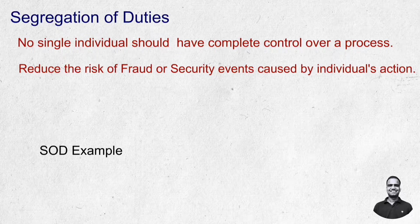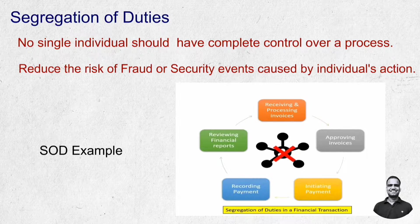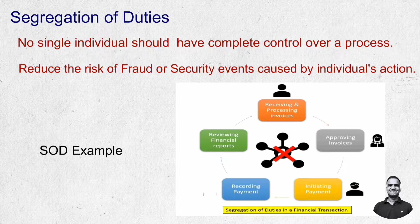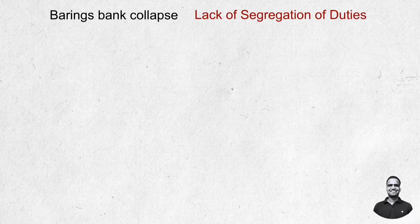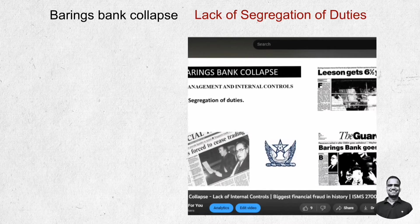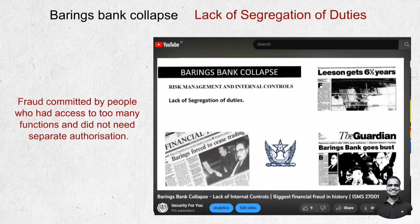For example, there cannot be a single person who is requesting, approving, and processing vendor payments — different individuals must handle these different transactions. A classical example of consequences from lack of segregation of duties is the Barings Bank collapse, a classic example of fraud committed by someone who had access to too many functions without requiring separate authorization.